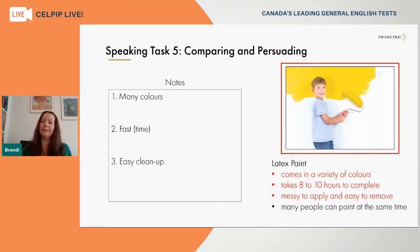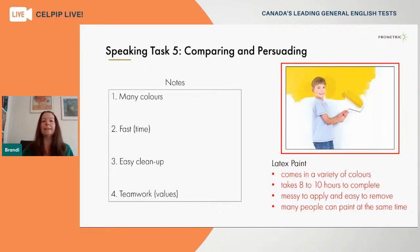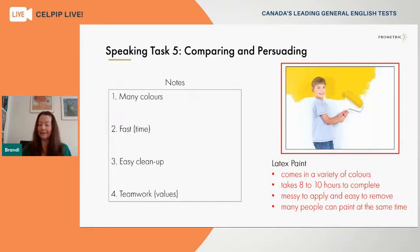That third point says 'messy to apply and easy to remove.' If I tell the teacher this is a really messy project, she might not want to select this option. So I'm going to ignore the first part and instead focus on the second half — it's easy to remove any spills. That would be very convincing. The fourth bulleted point talks about how many people can paint at the same time, which I can frame around the values these children will learn, like teamwork. These four numbered points in my notes use the bulleted points just as a guide, using simple language to capture those ideas quickly.